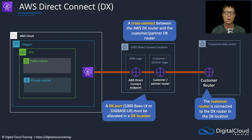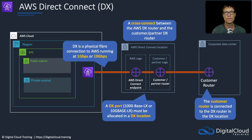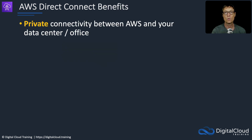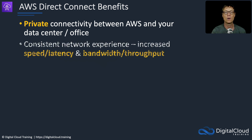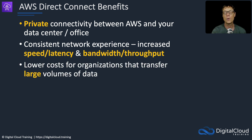This is not something you can set up very quickly. With Direct Connect, we say weeks to months - that's how long it's going to take to provision. The actual DX connection is a physical fiber connection to AWS running at either one gigabits per second or 10 gigabits per second. The key benefits are: private connectivity between AWS and your data center or office, consistent network experience with increased speed and lower latency, improved throughput and high bandwidth, and it can lower costs for organizations that transfer a large volume of data.